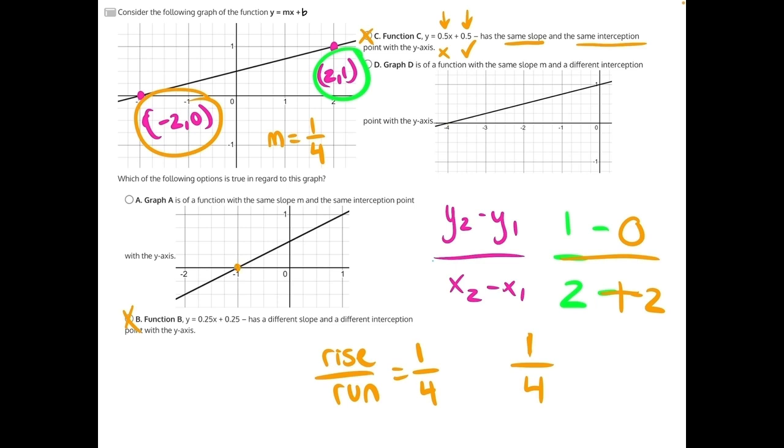We'll start here in answer choice a, we'll rise 1, and we will run 4. This point does not exist on the graph, therefore making a incorrect.